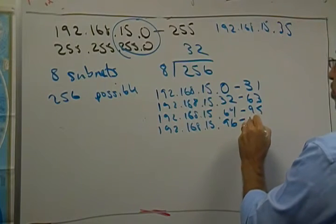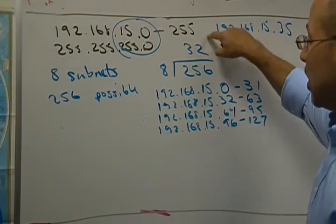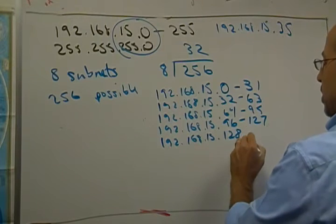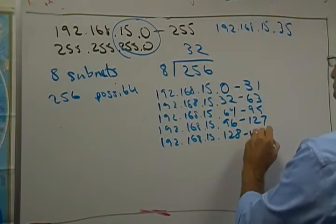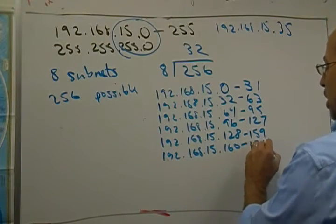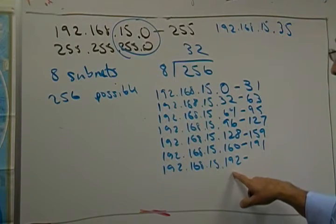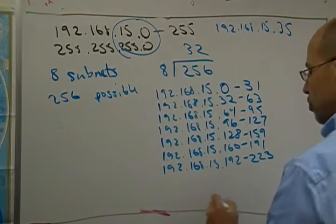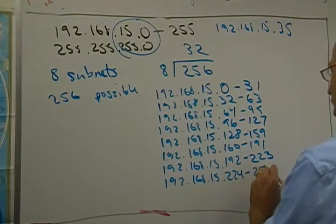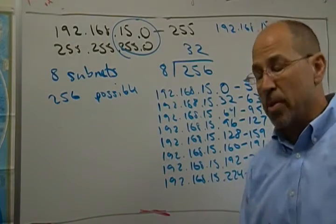Continuing: 192.168.15.96 to 127 — we're exactly halfway through our address space. Then 128 to 159, 160 to 191, 192 to 223, and 224 to 255. That finishes it up. One, two, three, four, five, six, seven, eight — there are my eight subnets, and all addresses are accounted for.